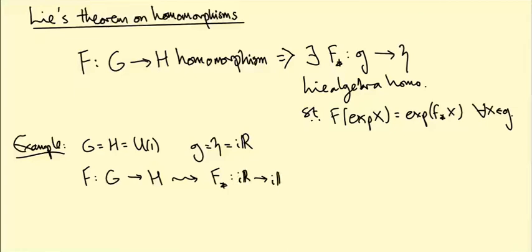Little h is also a one-dimensional vector space, so the only linear map from the imaginaries to the imaginaries is F star of i theta equals i lambda theta for some lambda in R. The only thing you can do is rescale.